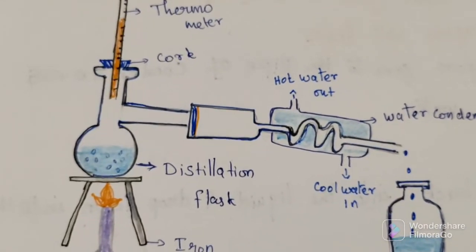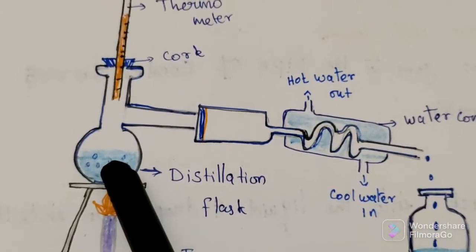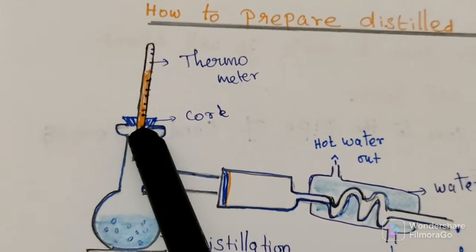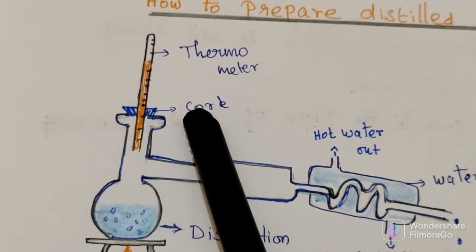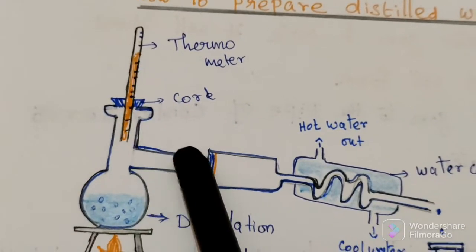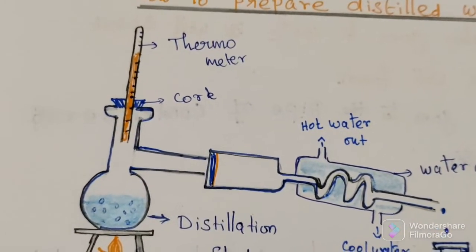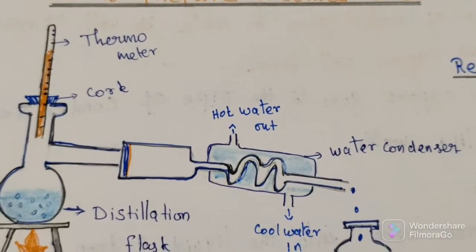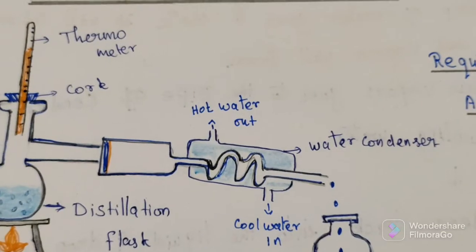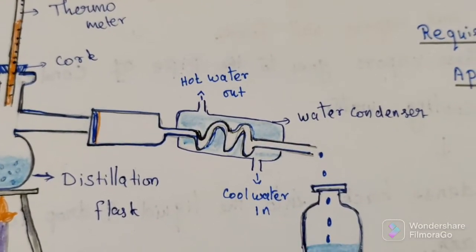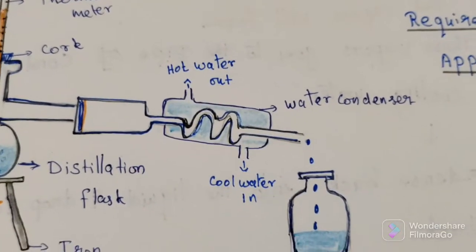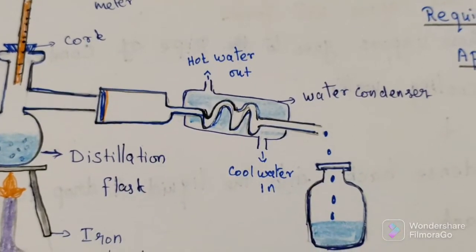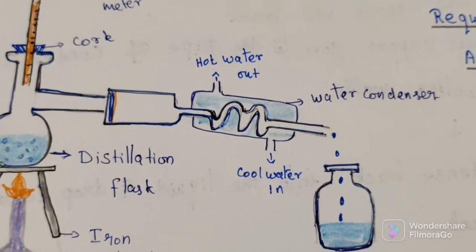So what we will do here: we will take one distillation flask, add water. After that, cover that opening part with the help of cork, then insert a thermometer at this side arm. We are connected with the water condenser. Then for exchanging heat cooling, here we are using cold water. Adjust the storage tank with the outlet of condenser.